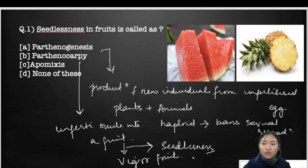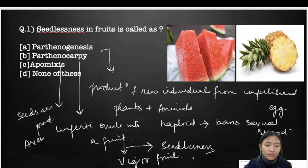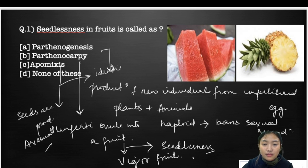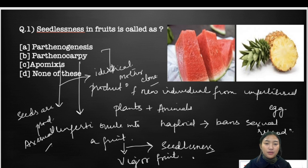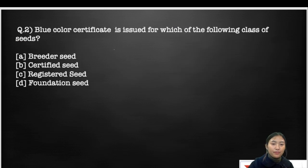Moving on, apomixis is a mechanism by which seeds are produced asexually. These seeds are genetically identical and they produce a mother clone. So the answer for this question is parthenocarpia. Some examples of parthenocarpia would be apples, pomegranate, watermelon, and pineapple.